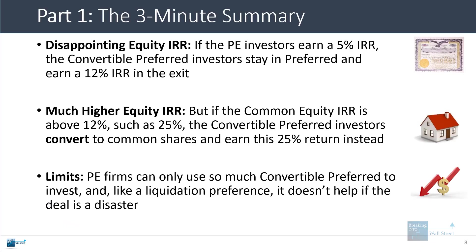There are some limits to this. Private equity firms can only use so much convertible preferred to fund deals, and similar to liquidation preferences it doesn't really help if the deal is a total disaster where they lose everything or lose 90%. In an extreme case, everyone loses money except maybe some of the senior-most lenders.